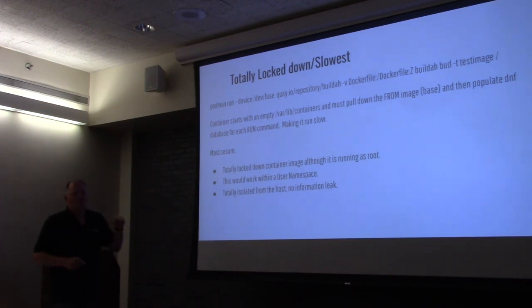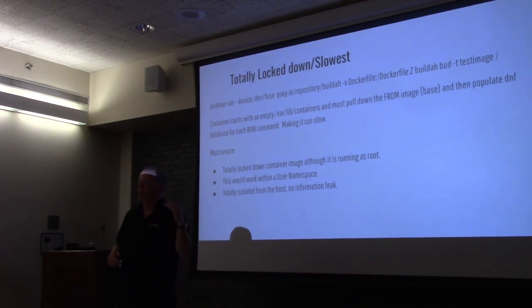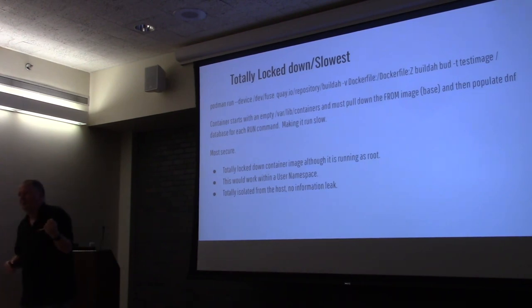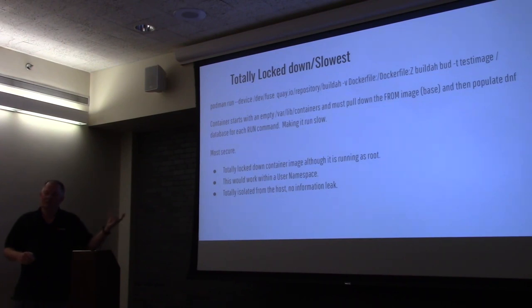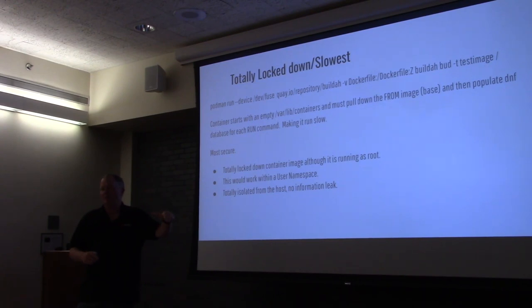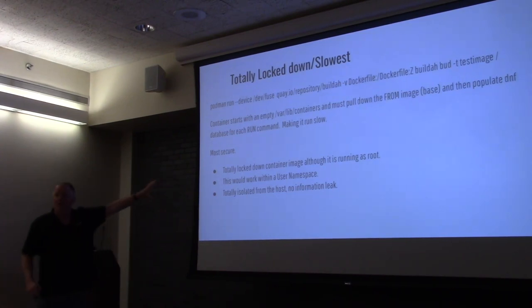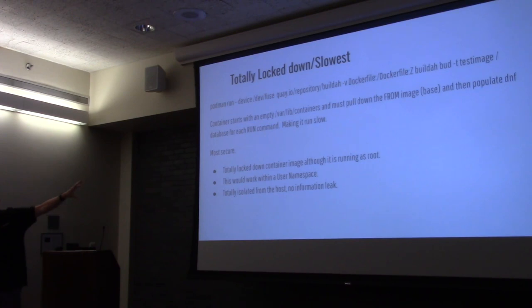Comparing the speed to running the Docker socket into the container: the first time you run with the Docker socket, if the Docker daemon had pre-pulled the ubi8 image, it would be instantaneously available. When I do the locked-down approach, it's more controlled — I can't modify the host's content and I can't get access to the host via the Docker socket. This is the most secure way, and this is how they're currently running containers inside OpenShift. OpenShift 4.2 runs in a locked-down environment but a fairly slow one.